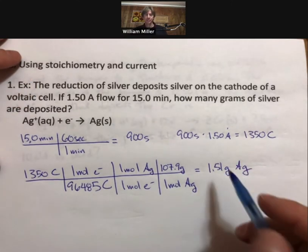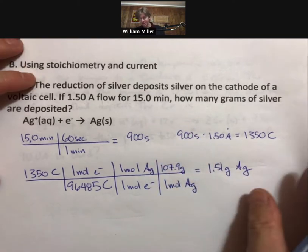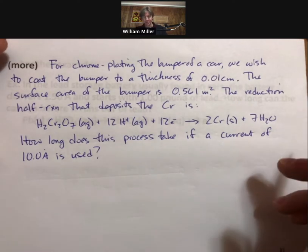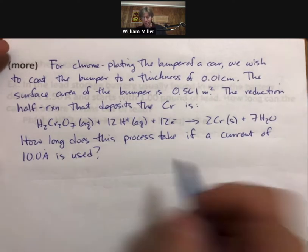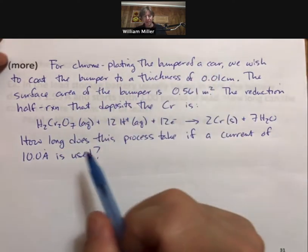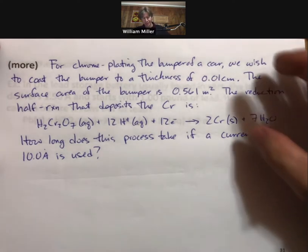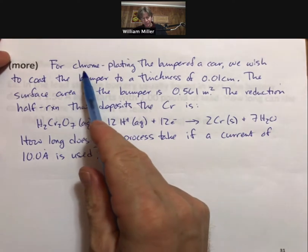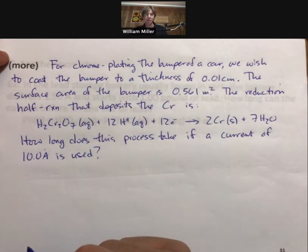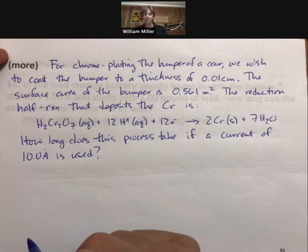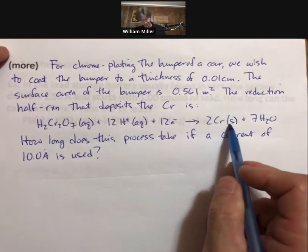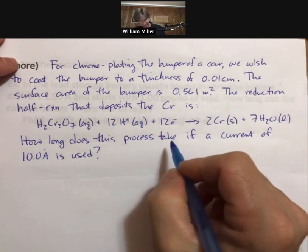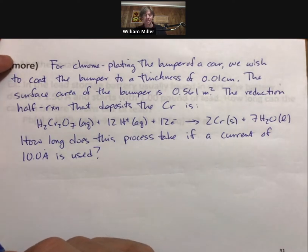The reduction of silver can also be used to silver plate materials. Instead of doing silver plating, we're going to do an example with chrome plating. We're going to be chrome plating the bumper of a car. Please stop the video to write down the problem statement. For chrome plating the bumper of a car, we wish to coat the bumper to a thickness of 0.01 centimeters. The surface area of the bumper is 0.561 meters squared. The reduction half reaction that deposits the chromium is given here. How long does the process take if a current of 10.0 amps is used?